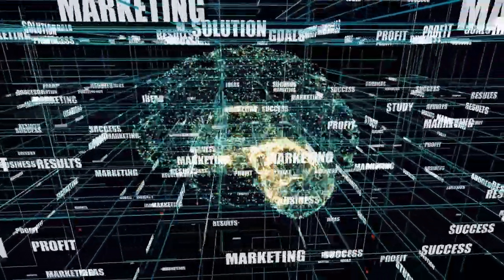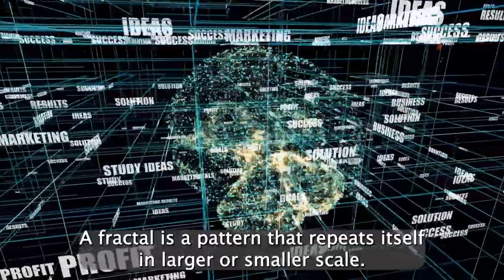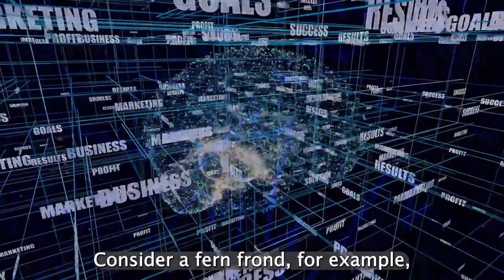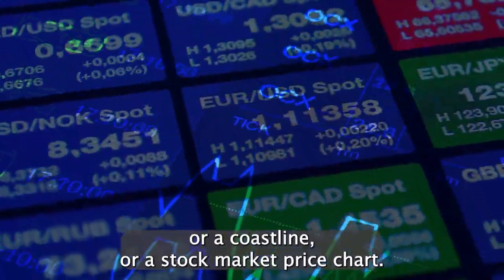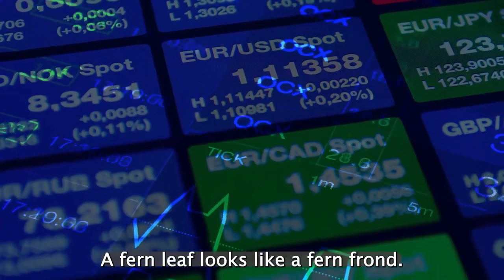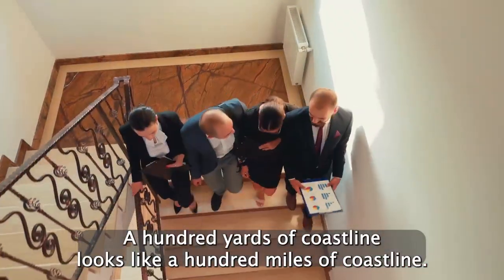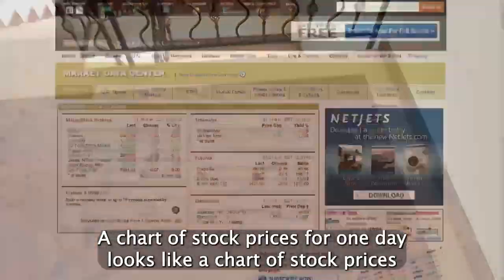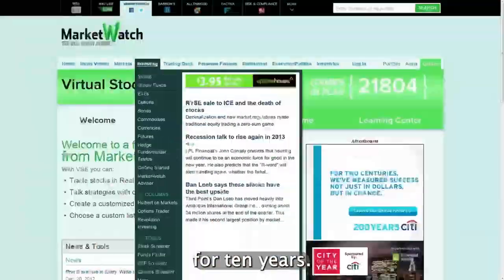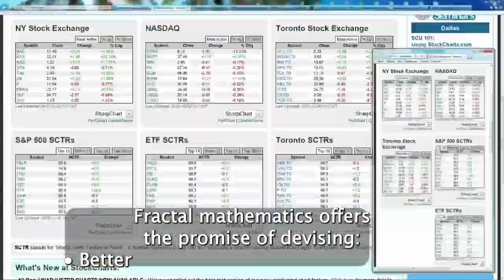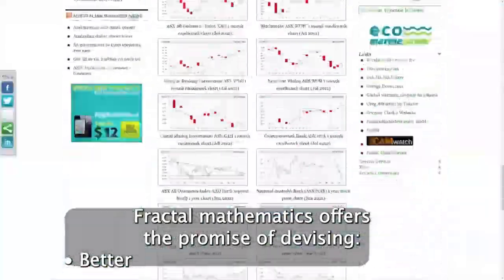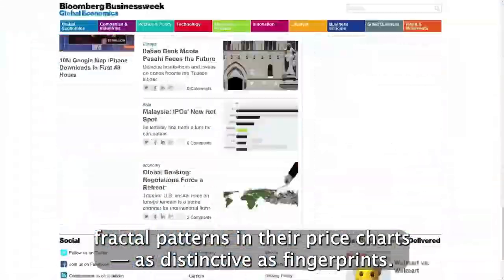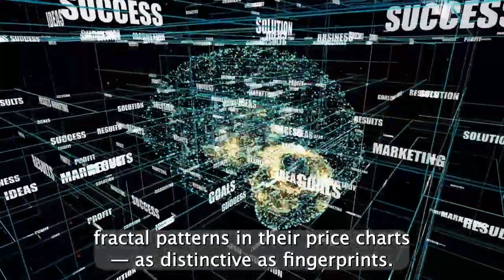Fractals and multifractals. A fractal is a pattern that repeats itself in larger or smaller scale. Consider a fern frond, for example, or a coastline, or a stock market price chart. A fern leaf looks like a fern frond. A hundred yards of coastline looks like a hundred miles of coastline. A chart of stock prices for one day looks like a chart of stock prices for ten years. Fractal mathematics offers the promise of devising better tools for investment analysis. Individual stocks may manifest unique fractal patterns in their price charts, as distinctive as fingerprints.